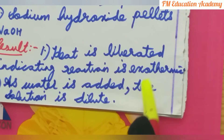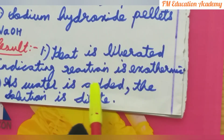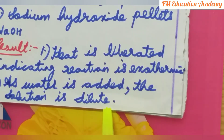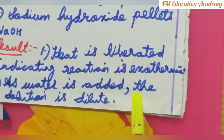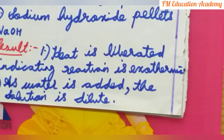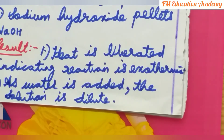So here also we get the same results: heat is liberated indicating the reaction is exothermic, and as water is added the solution is dilute. The concentration of OH⁻ ions decreases when we add water to the base. The process in which water is added to acid or base and the concentration of H₃O⁺ (H⁺) or OH⁻ ions decreases is called dilution.